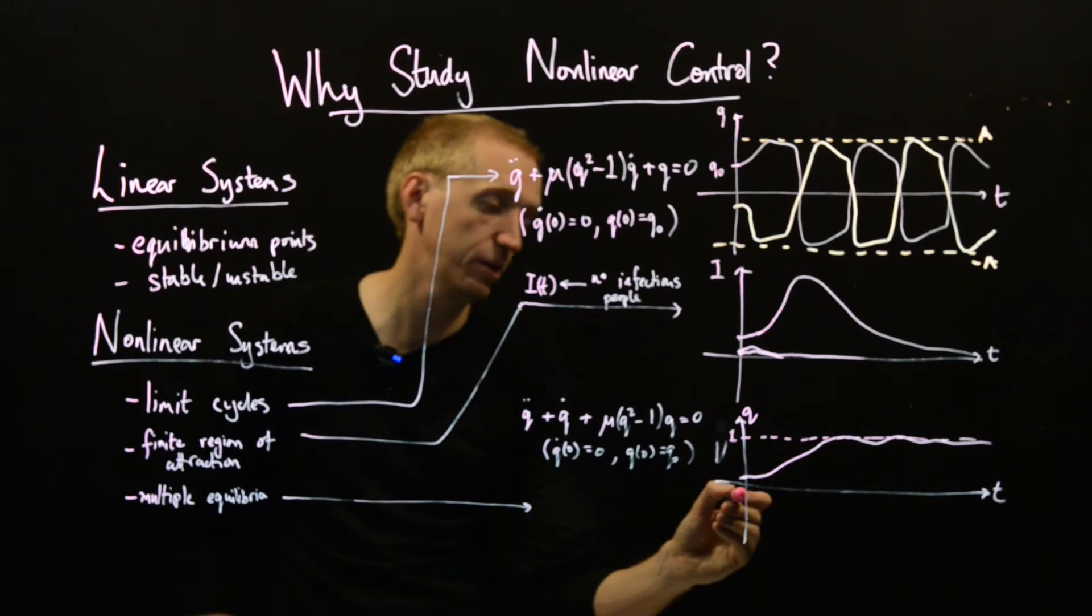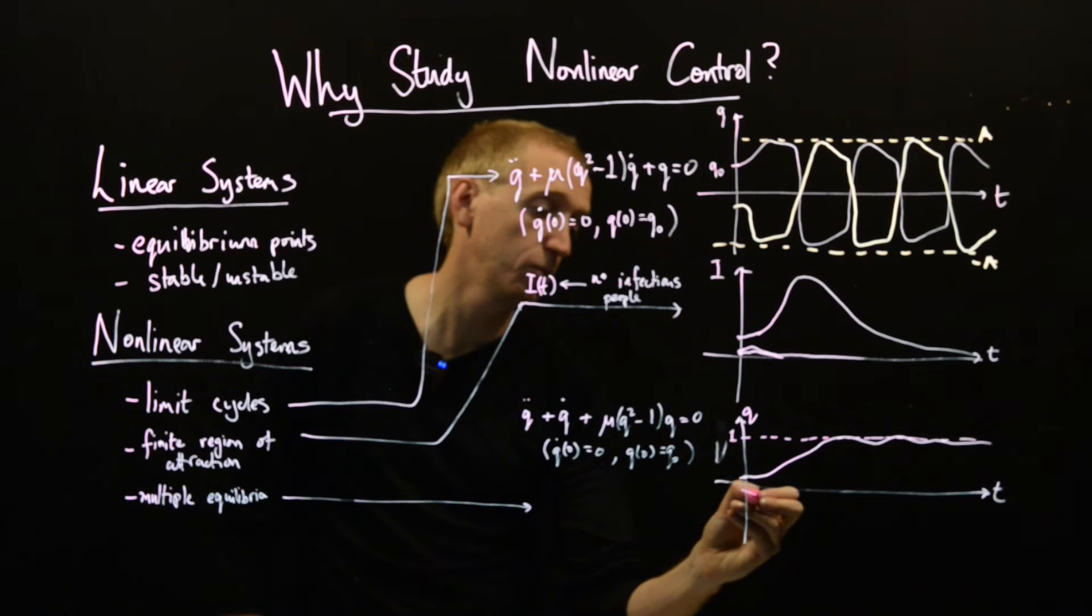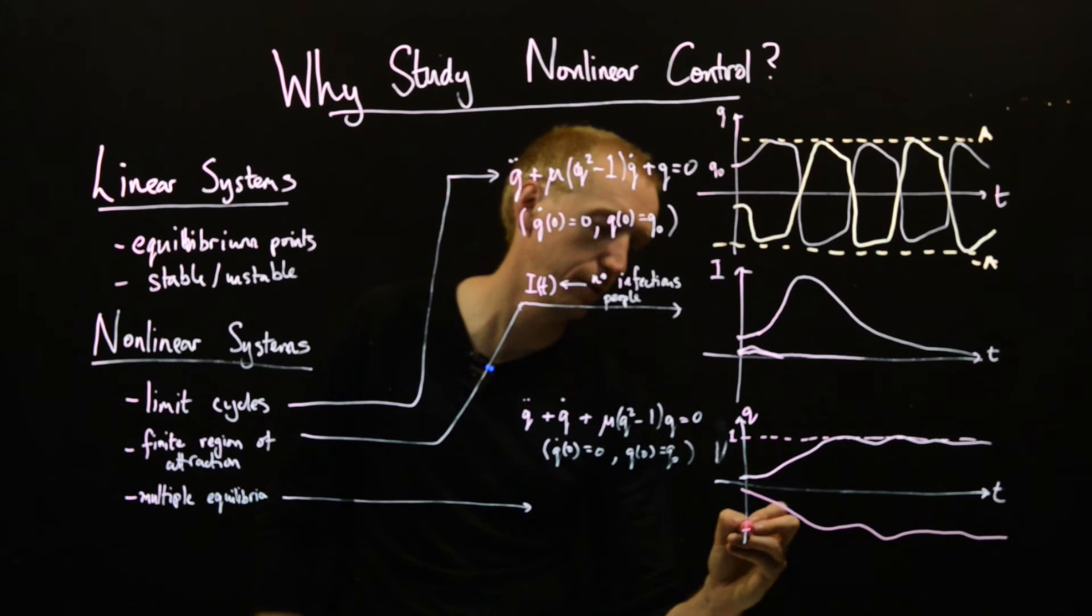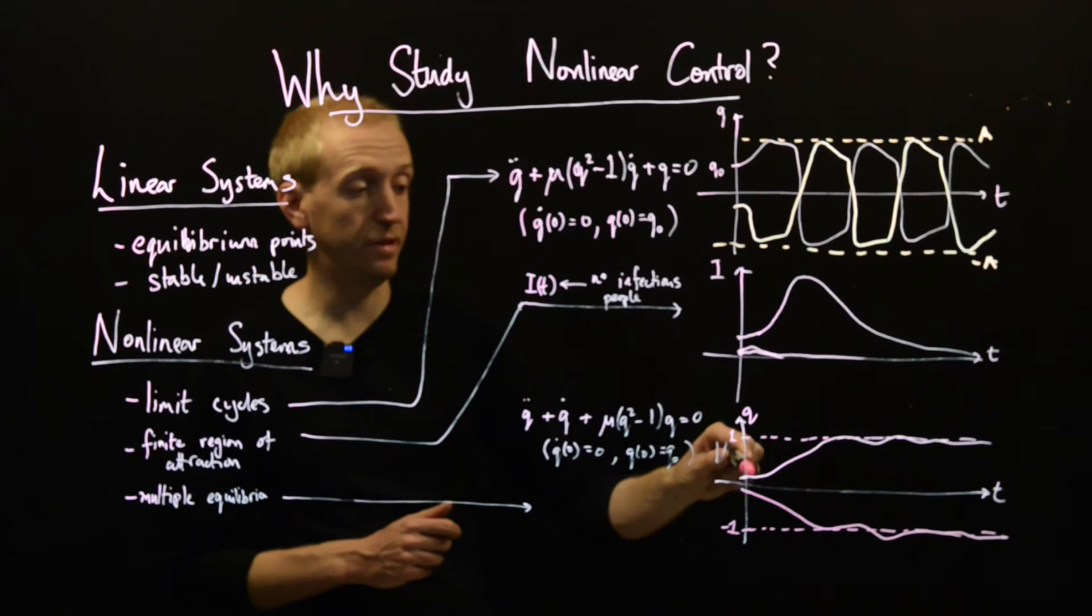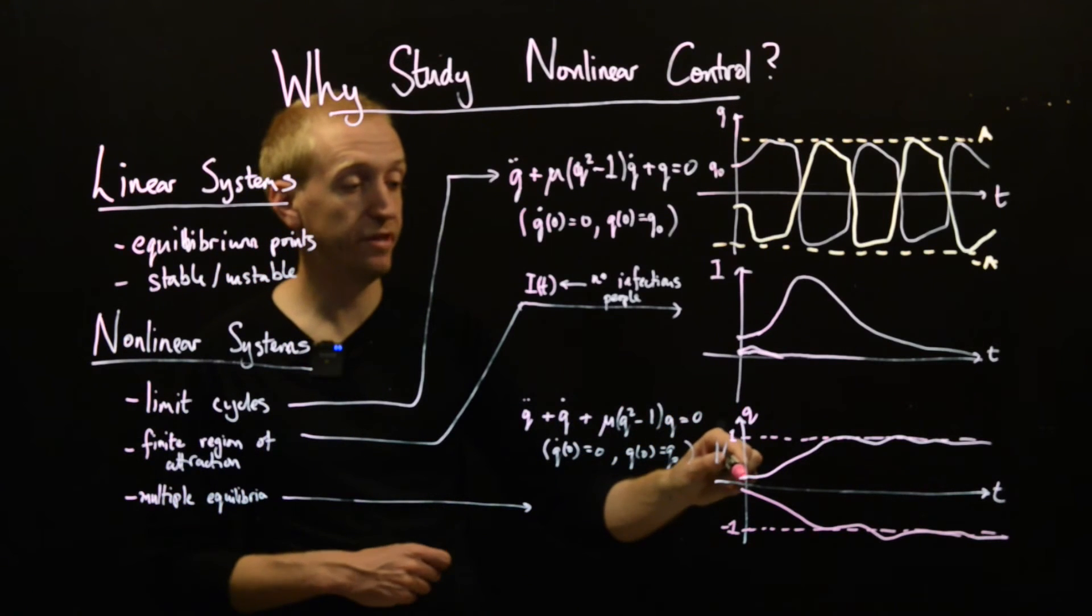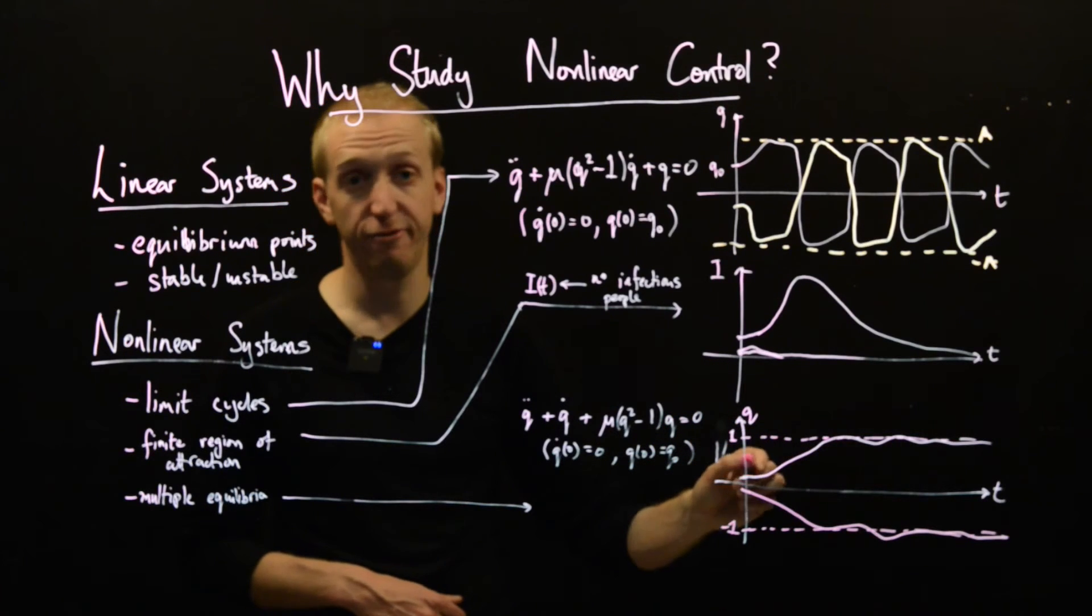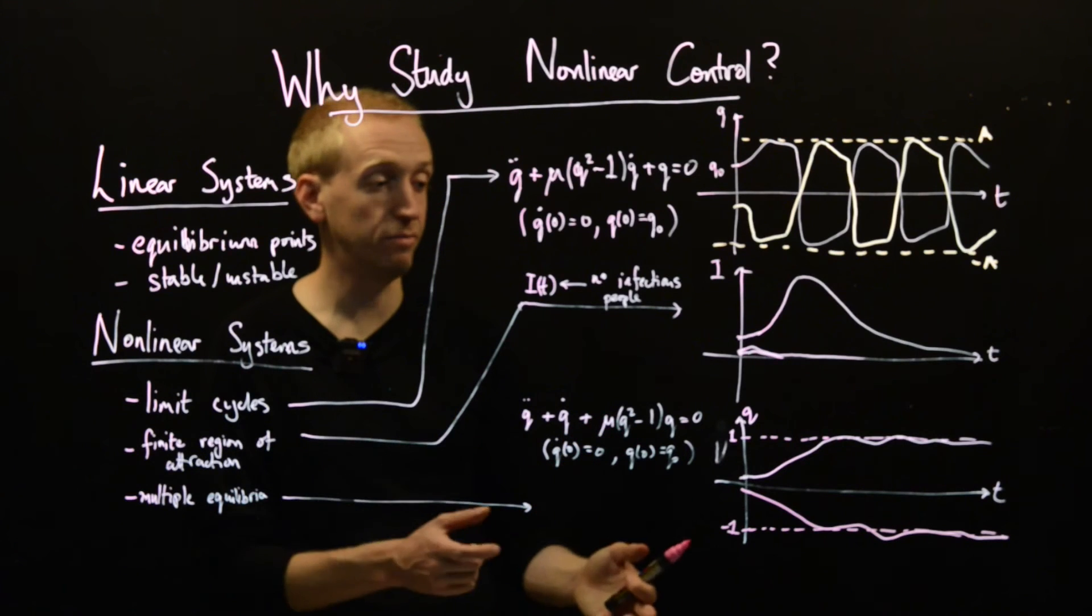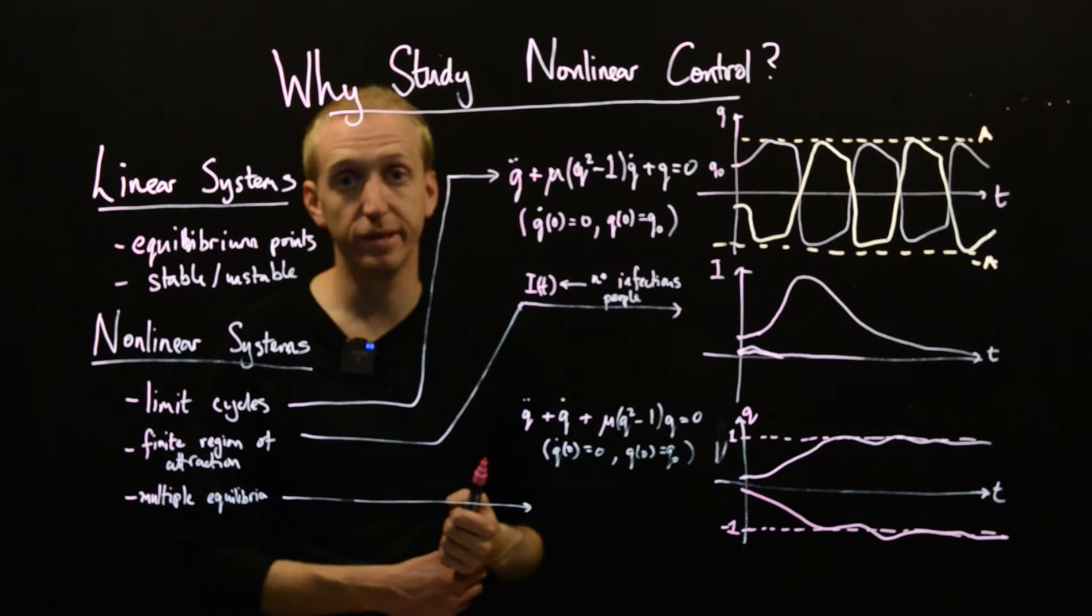So our value of q will settle down to a value of 1. But if we pick a different initial condition, say we pick an initial condition down here, it will tend to a completely different point. And it will settle down over here to minus 1 instead. And in fact, these are the two things that can happen. If you start above the positive initial conditions, you tend to 1. And for negative initial conditions, you tend to minus 1. So we have this system which has got two distinct stable equilibrium points.